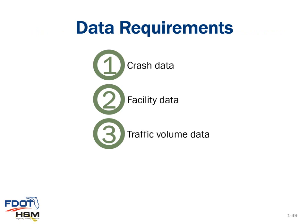The data requirements for the predictive analysis include crash data, facility data, and traffic volume data. Facility data typically includes the type of roadway, functional classification, number of lanes, shoulder width, presence of median, and segment length. The Highway Safety Manual uses AADT as the traffic volume measure, which is a readily obtainable type of information for a facility.